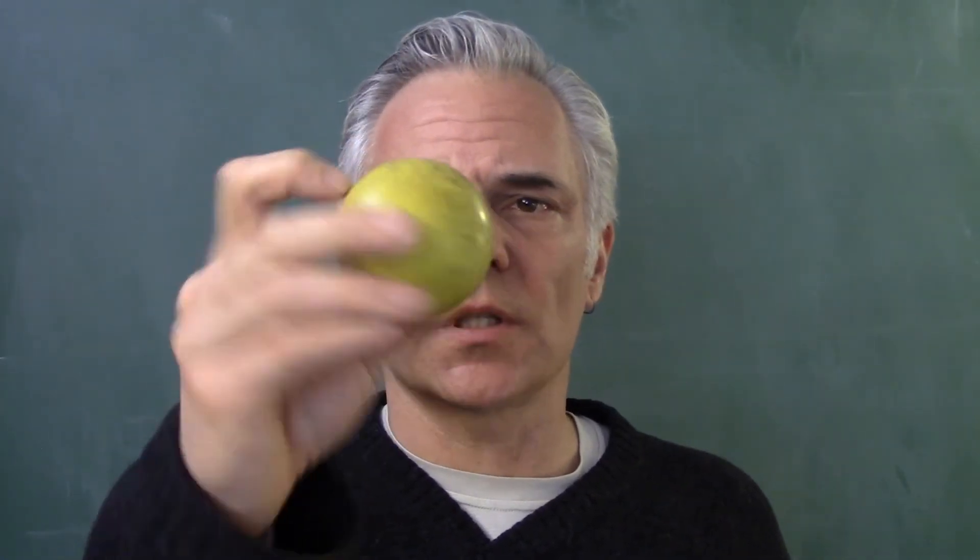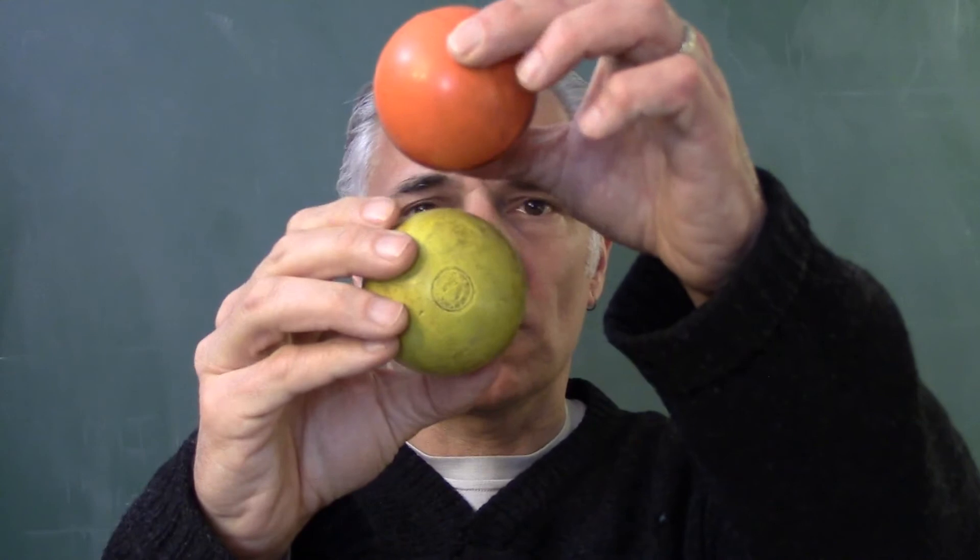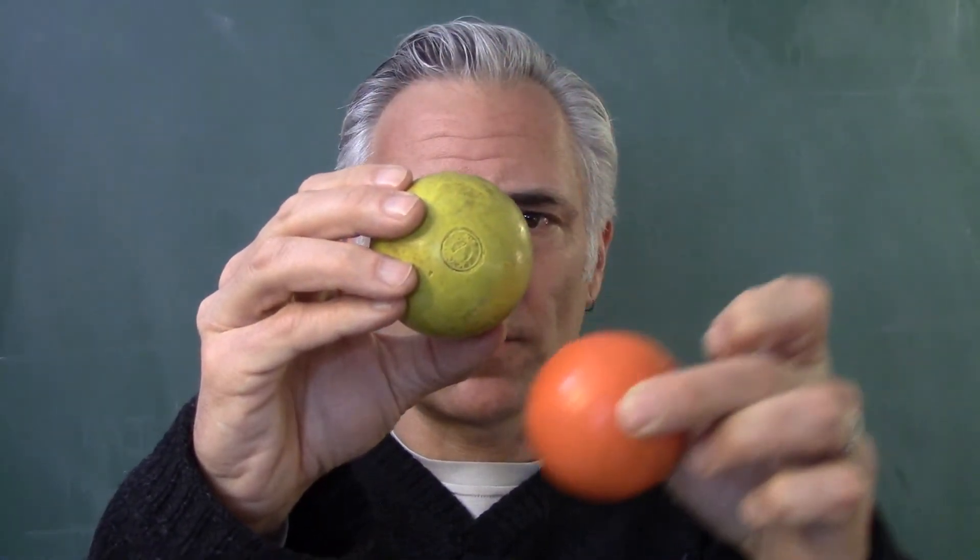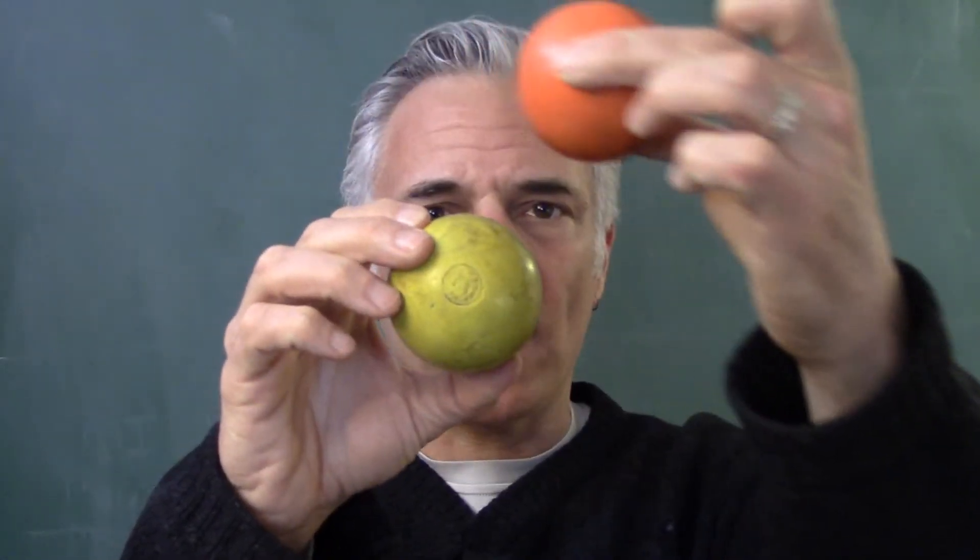So here's the idea behind this experiment. Let's say that the ether happens to be affixed to the Sun, is at rest with respect to the Sun. So this orange, this is the Sun. So here imagine we have the Earth orbiting around the Sun.